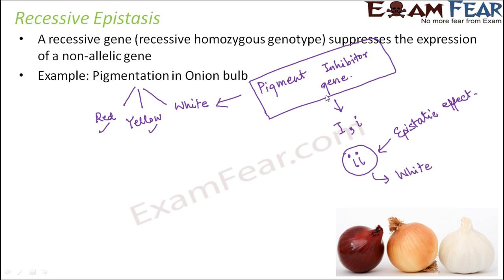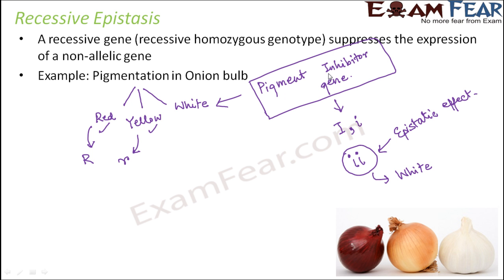Setting aside the epistatic gene, the other two colors are red and yellow, where red is dominant over yellow. Red is denoted by capital R and yellow by small r, as they are alleles of the same gene. The white color caused by the pigment inhibitor gene is a non-allelic gene, represented by capital I and small i — the dominant and recessive alleles of that separate gene.